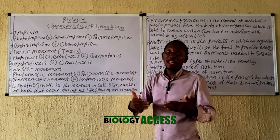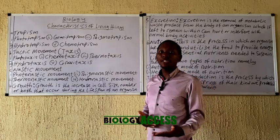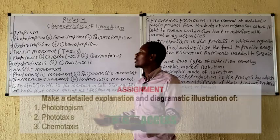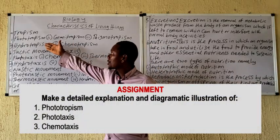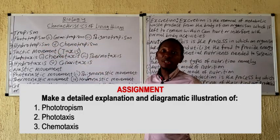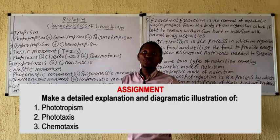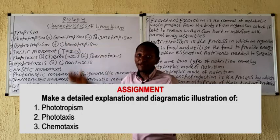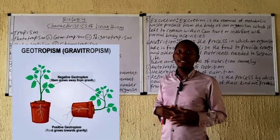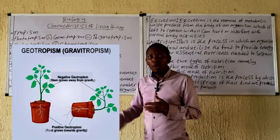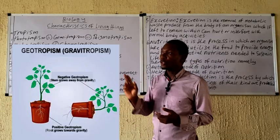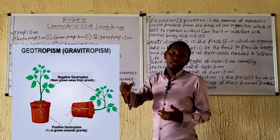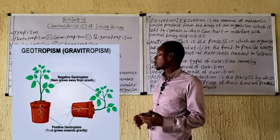In phototropism, if the plant part is moving away from the light source, it is called negative phototropism. You can see in the diagram that the root of the plant is moving downward towards gravity — gravity is downward — while the shoot is moving upward away from gravity. That means the root is positive geotropic while the shoot is negative geotropic.